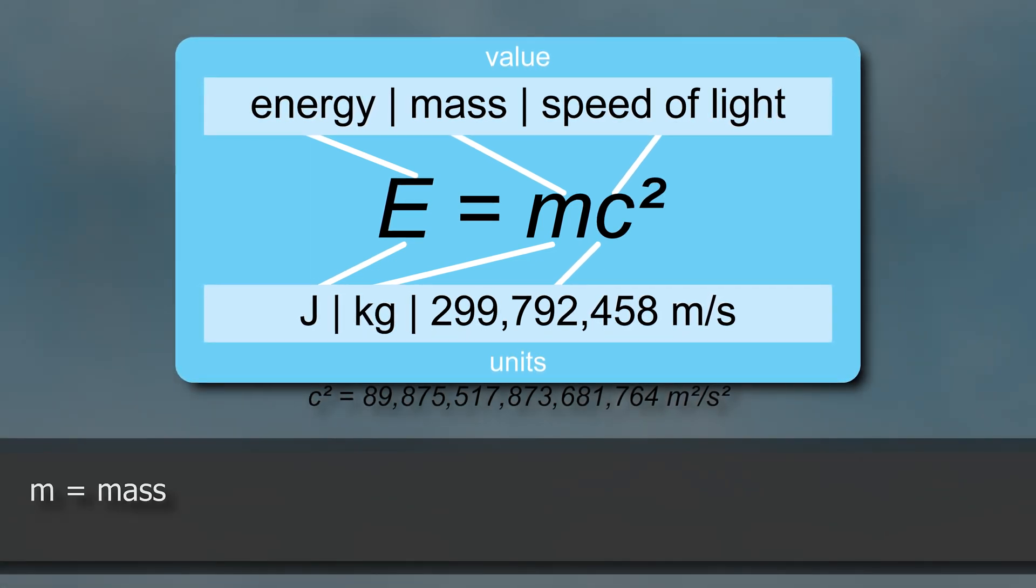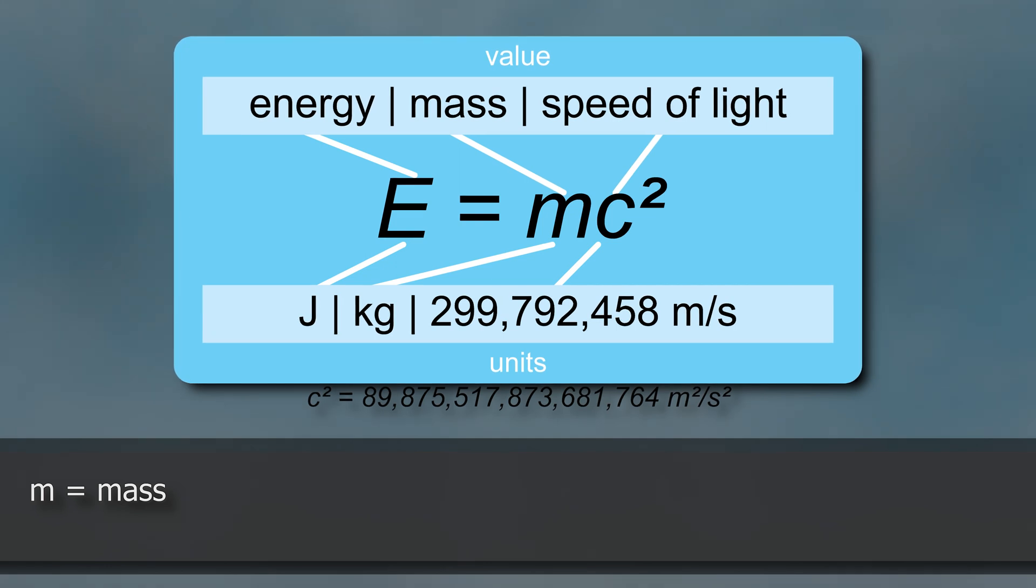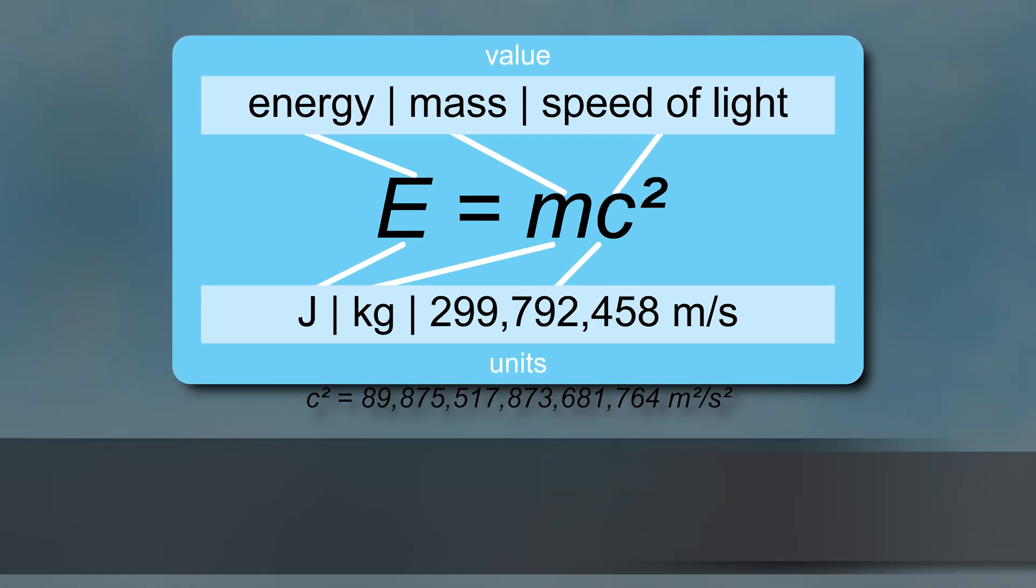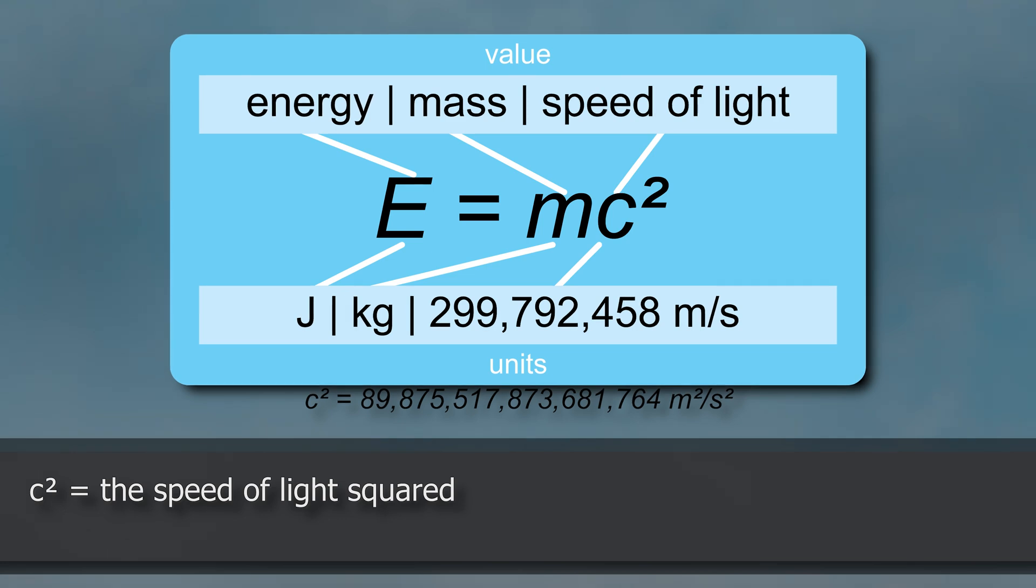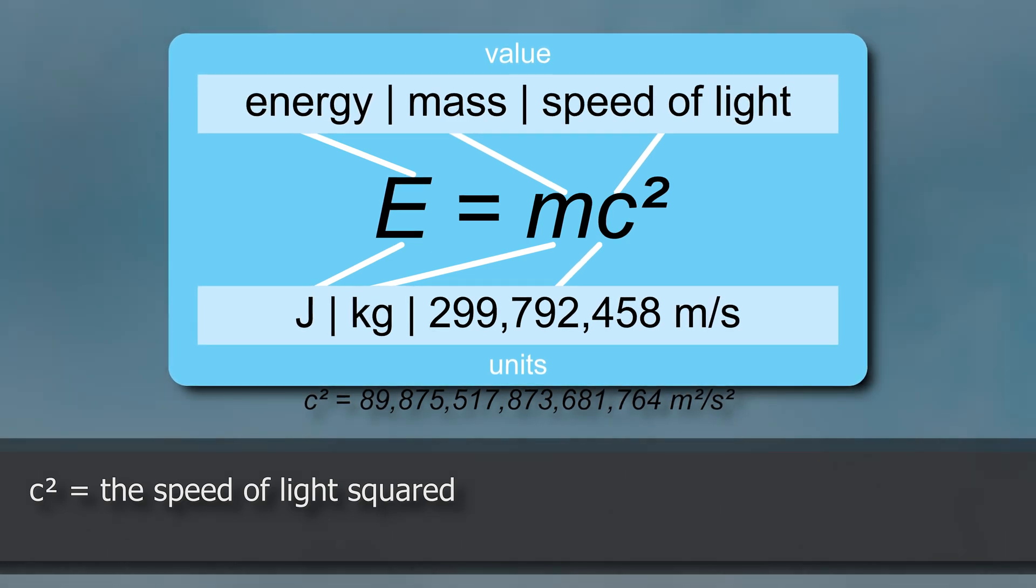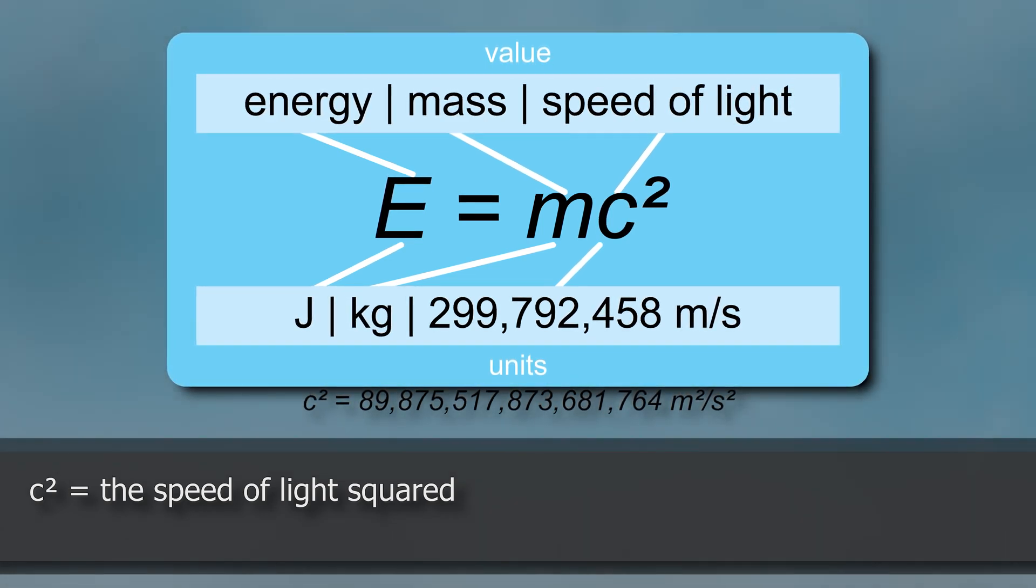M or mass has a conversion factor that connects it to energy. C squared, which is the speed of light squared, is the optimal factor to equalize mass and energy.